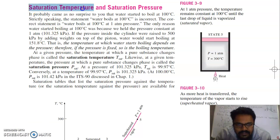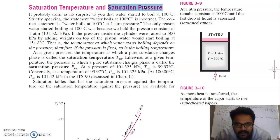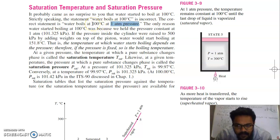Now we will start with the topic of saturation temperature and saturation pressure — meaning the point at which your water will convert to vapour. It probably comes as no surprise that water starts to boil at 100 degree Celsius, but strictly speaking, the statement 'water boils at 100 degree Celsius' is incorrect. The correct statement is: water boils at 100 degree Celsius at 1 atmosphere pressure. The boiling point of water depends on the atmospheric pressure.